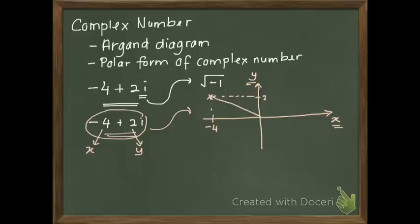What do we get from this Argand diagram? There are 2 things that you can get from the Argand diagram. The first one is modulus, or R, and the second one is argument.